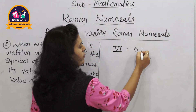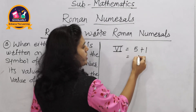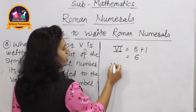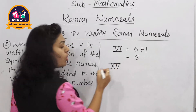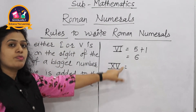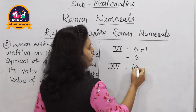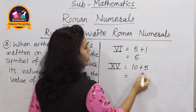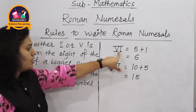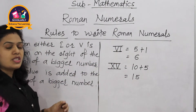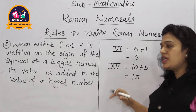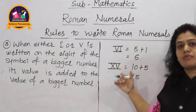The value of V is 5 and the value of I is 1, so 5 + 1 = 6, meaning VI represents 6. Another example: writing V on the right side of X gives XV. The value of X is 10, plus V which is 5, equals 15. So XV represents 15. This third rule tells us that writing I or V on the right of a bigger number adds to that number.